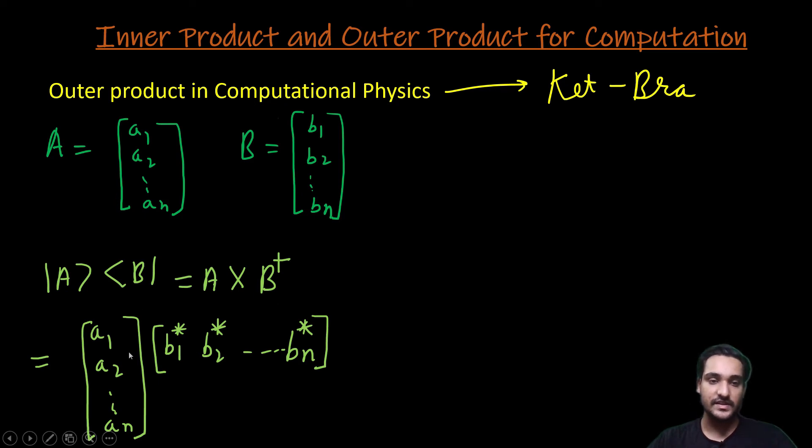As you can see here, vector A remains as it is, but a complex conjugate and then the transpose of that complex conjugate has been taken over here, and it will be multiplied with it. It will be an n into n matrix. You can do it by matrix multiplication. It is a normal multiplication.